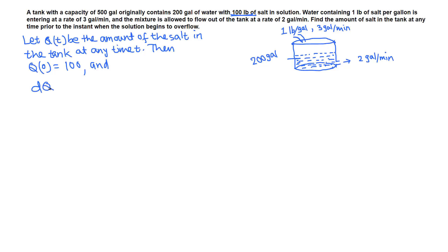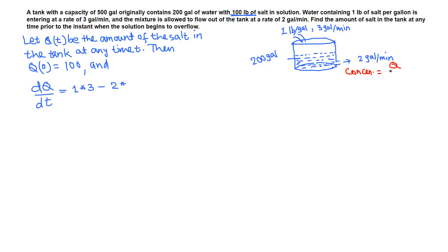This process is modeled by the differential equation: the rate of change of the salt content, dq/dt, equals rate in minus rate out. Rate in means flow rate in times concentration: one times three equals three. Rate out is the flow rate out times the concentration. The concentration is the amount of salt at any time t divided by the volume of water, so q divided by the volume.